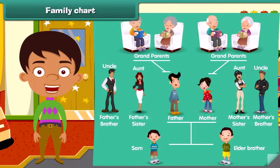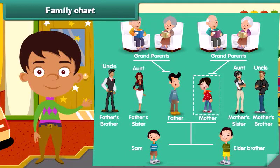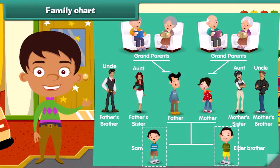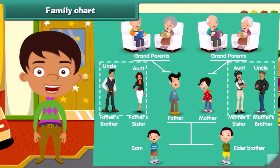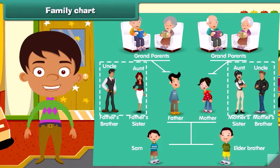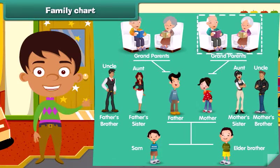Dear, let's look at Sam's family. She is Sam's mother and he is Sam's father. He is Sam's elder brother. Look here — they are his parental grandparents. They are Sam's uncle and aunt. And they are his maternal grandparents.